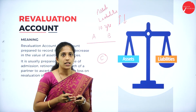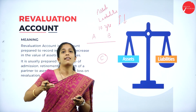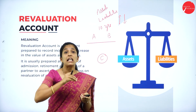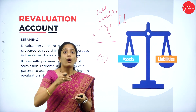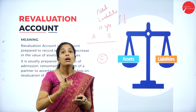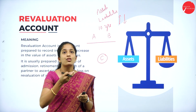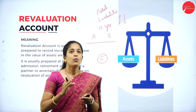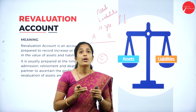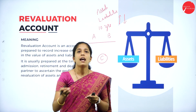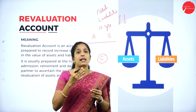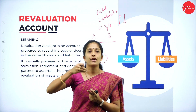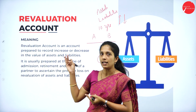For example, a fixed asset like furniture — its value keeps on decreasing, which we call depreciation. So in order to know the current value of assets and liabilities, or to what extent they have increased or decreased during admission of a partner, we prepare the revaluation account. Under revaluation account, we record to what extent the assets and liabilities have increased or decreased.